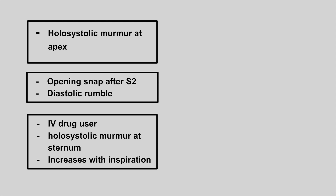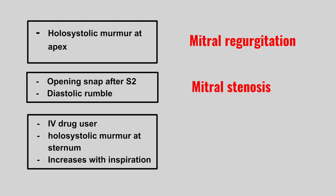The next one is a holosystolic murmur at the apex — this is mitral regurgitation. The next one is an opening snap after S2 with a diastolic rumble — this is mitral stenosis. A helpful mnemonic: mitral stenosis equals opening snap, O-S-M-S.